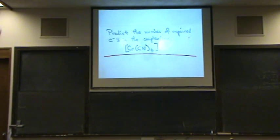All right, we want to predict the number of unpaired electrons in the complex ion, hexacyanochromium 6.